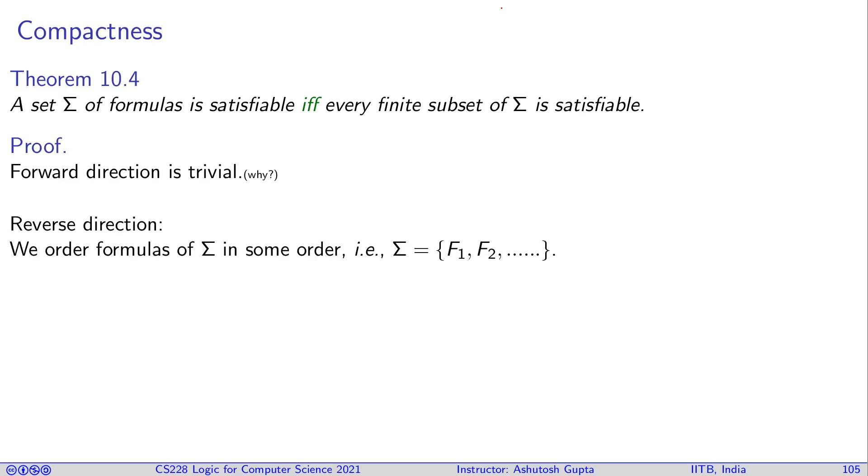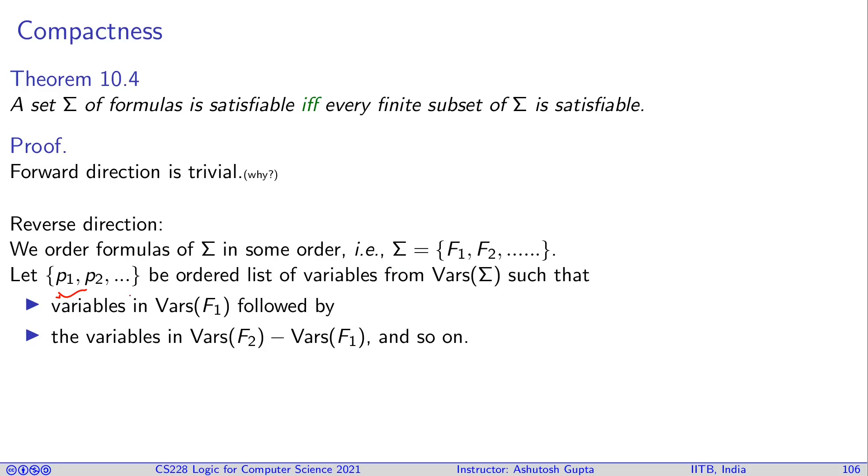Let's look at the reverse direction. How do we argue in the reverse direction? First, all the formulas in Σ are put in some order: F_1, F_2, F_3, F_4. Some indexing order. This is possible because number of formulas are countable. Let P_1, P_2 be ordered list of all the variables occurring in Σ and they are put in a particular fashion. First, all the variables of F_1 are written down. Then the extra variables that may be showing up in F_2 are written down. Then the variables which show up in F_3, but not in F_2 and F_1 are written down and so on and so forth. So this is the way it is being done.